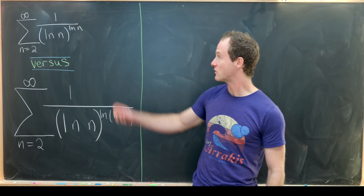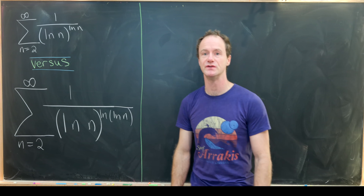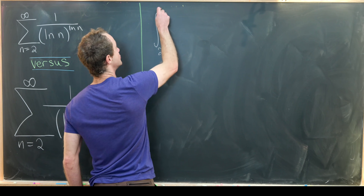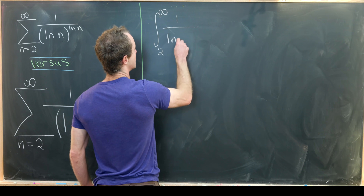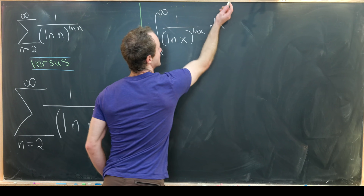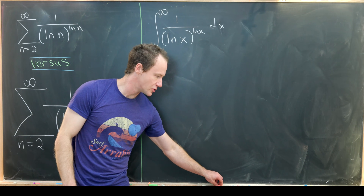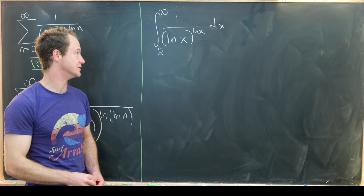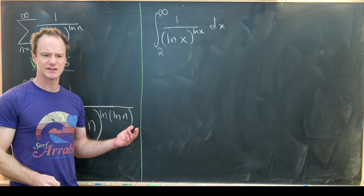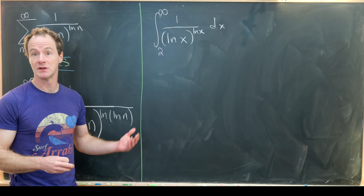Let's look at the first one and investigate its convergence using the integral test. That means we want to look at the integral from two to infinity of one over natural log of x to the natural log of x dx. We'll approach this with a u-substitution — since we see natural logs everywhere, it might be nice to let u equal natural log and see how that change of variables helps.